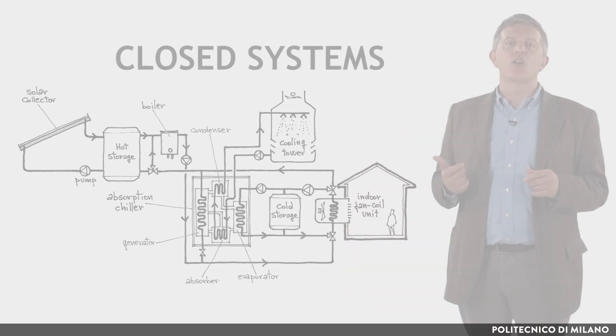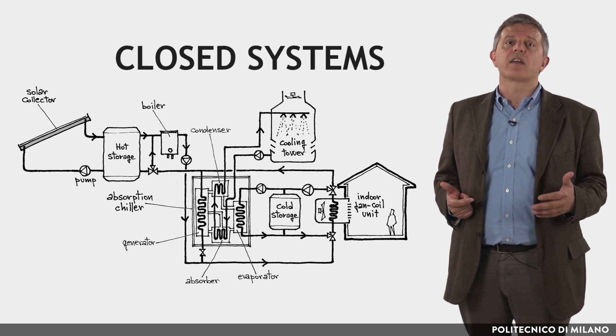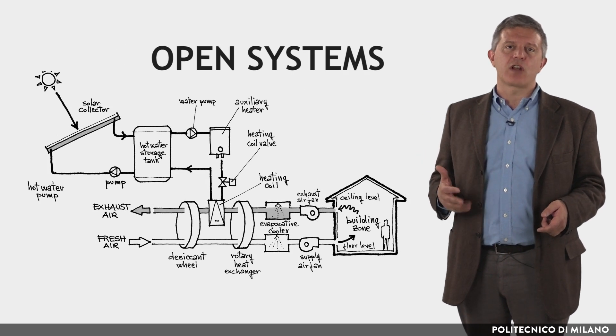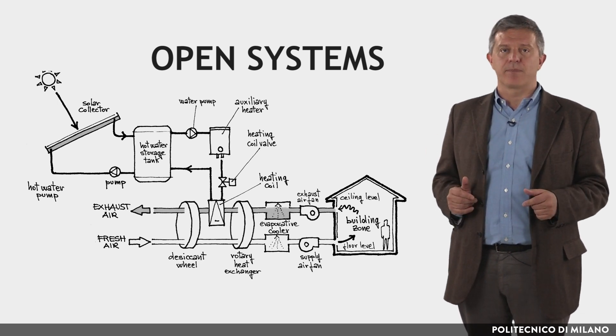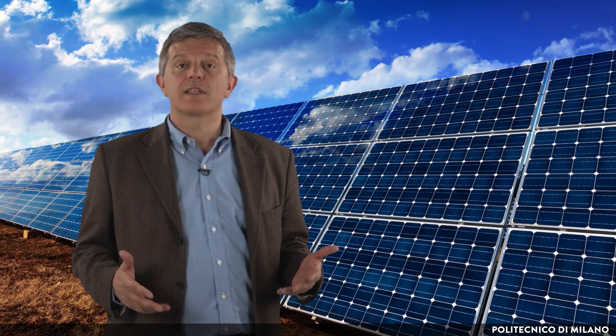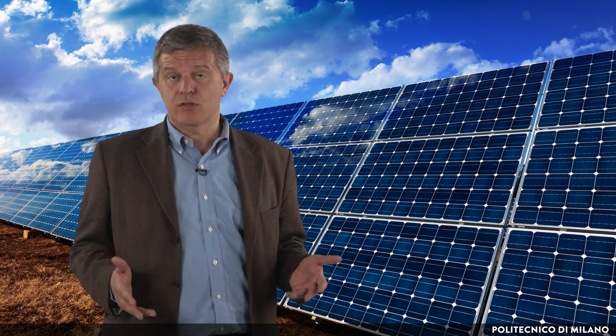Solar thermal collectors can also be used for cooling. The thermal energy generated is used to feed a cooling process according to two types of systems: closed systems, where the solar system supplies hot water to an absorption chiller integrating the conventional heat source, and open systems, in which the solar system provides heat for regenerating a desiccant wheel, which is part of an adiabatic cooling system. As shown in this lesson, it is possible to exploit the sun to produce electricity and heat, and in particular applications, for cooling purposes.